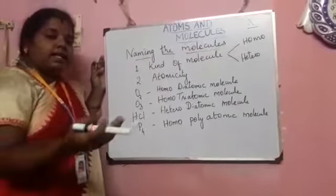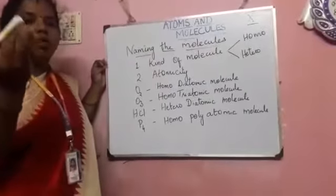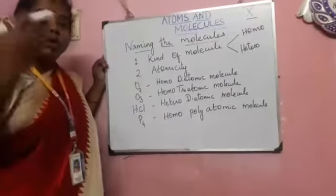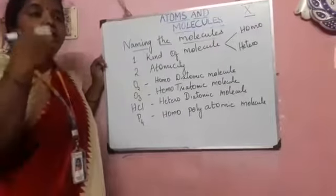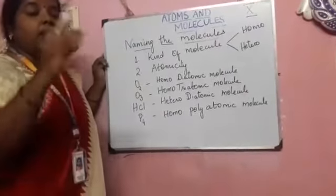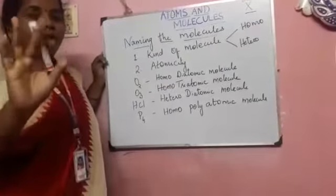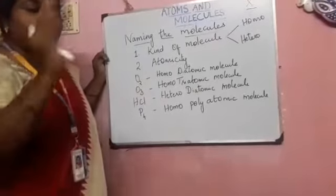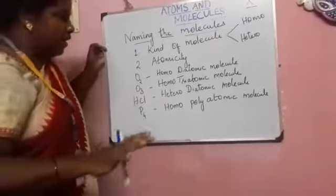Next is atomicity. Atomicity is: mono, di, tri, or more than three — name it as poly. These two things we have to keep in mind before naming a molecule.